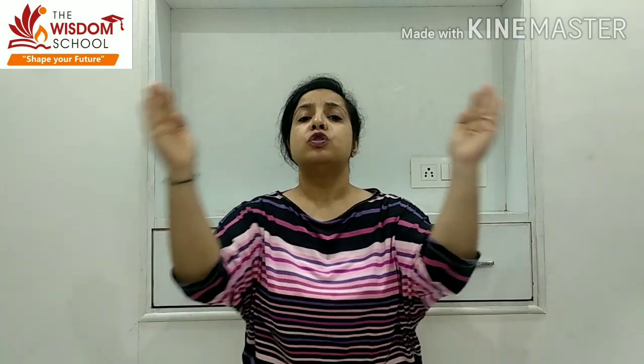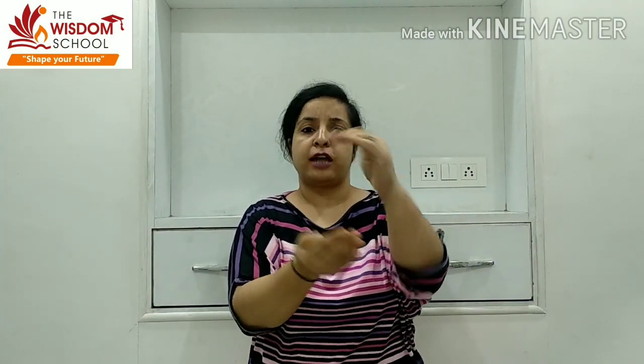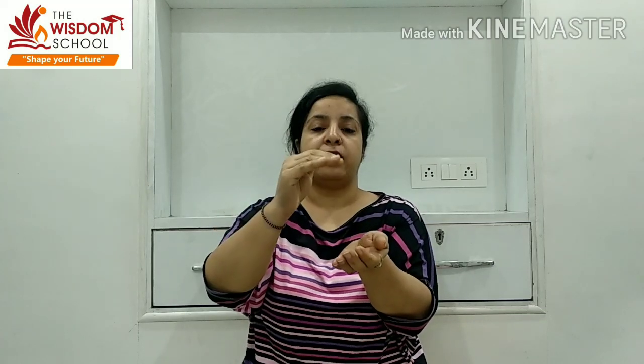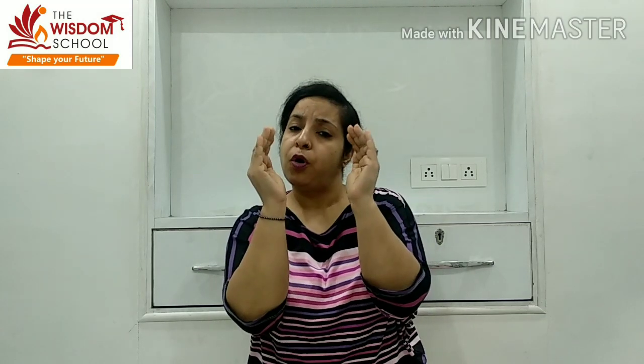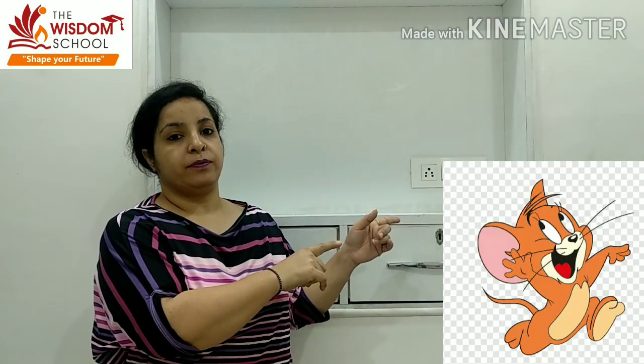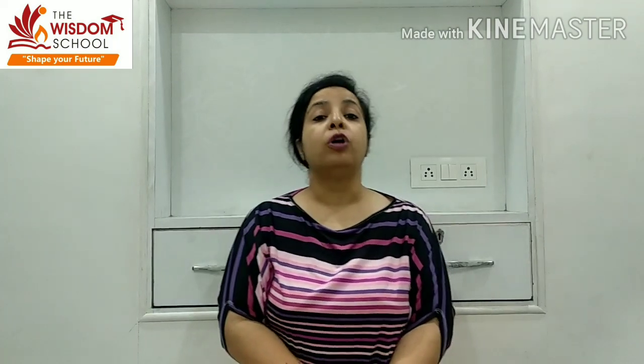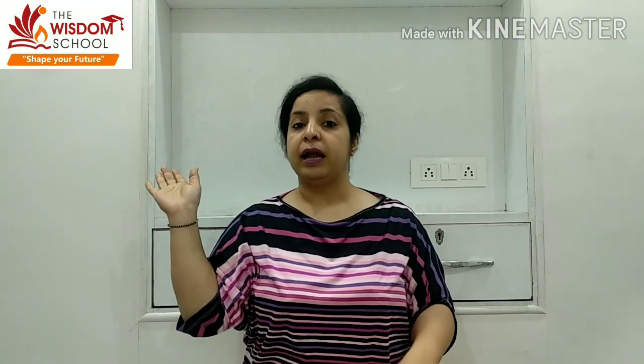And next word is small. Small means chota sa — bilkul chota sa. Bhoat small hai. Now look at the picture of small. Clear. Very good. Now look at both pictures — big and small. Aapko difference nazar aa raha hai na? Big means bada hai, aur jo small hai, toh bhoat chota sa hai. Hai na? Okay? Clear. Very good.